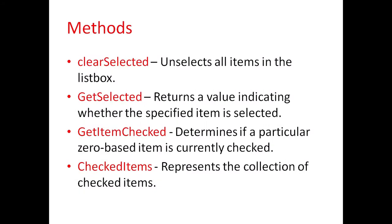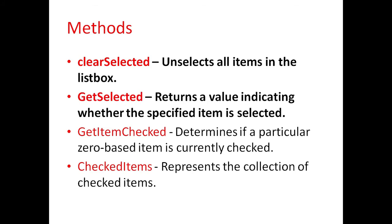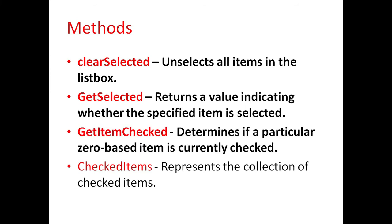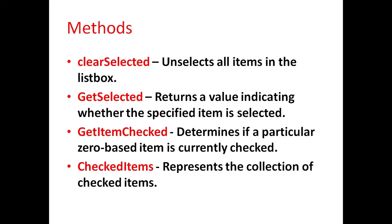Different methods for CheckedListBox are: ClearSelected, which unselects all items in the list box. GetSelected, which returns a value indicating whether the specified item is selected or not. GetItemChecked method determines if a particular zero-based item is currently checked. CheckedItems method represents the collection of checked items.